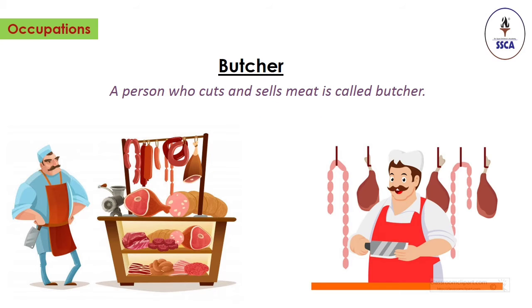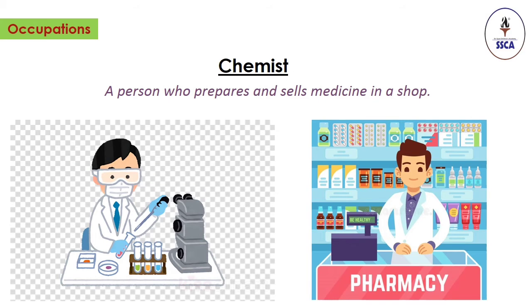Butcher. A butcher is a shopkeeper who cuts up and sells meat. Chemist. A person who prepares and sells medicine in a shop is called a chemist.